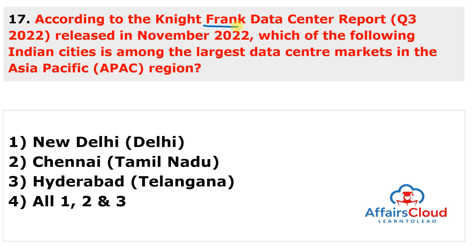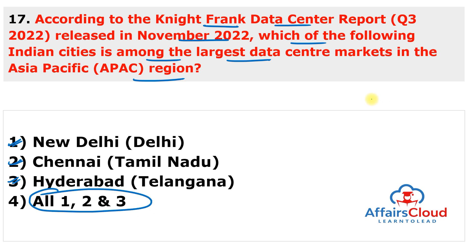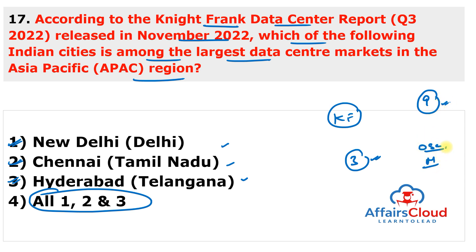Next question: According to the Knight Frank Data Center Report (Q3 2022) released in November 2022, Indian cities — New Delhi, Chennai, and Hyderabad — are among the largest data center markets in the Asia Pacific region. The market analysis covers nine cities in Asia Pacific, including Osaka (top), Melbourne, Jakarta, Manila, Hanoi, Taipei, and the three Indian cities: Hyderabad, New Delhi, and Chennai.